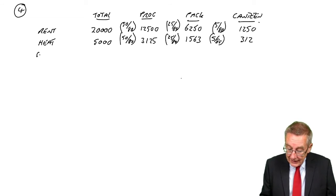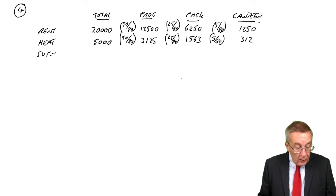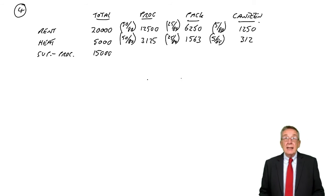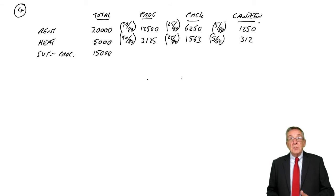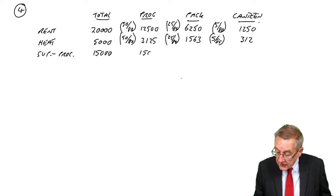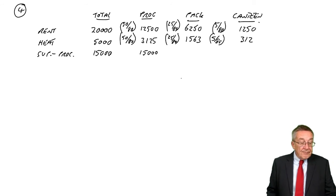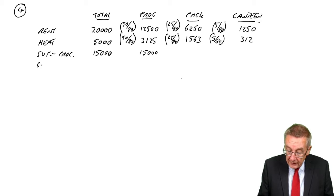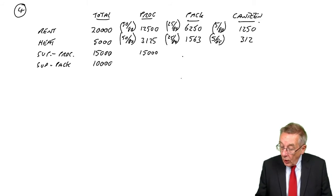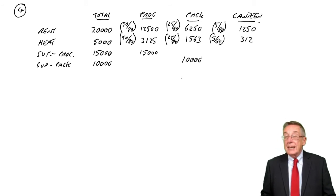Next are supervisors. Here we can allocate directly. The supervisor for the processing department costs 15,000, so all of that goes to processing. Similarly, the supervisor for packing costs 10,000, and all of that is allocated to packing.